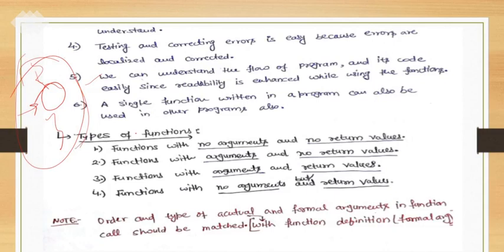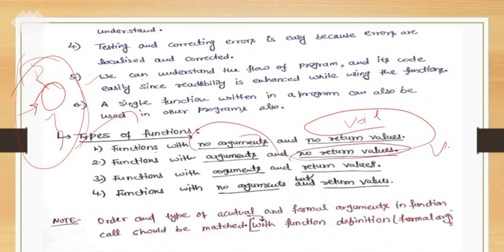The types of functions we have discussed: functions without any argument and without any return type (void); void with argument; with return type and without parameter; and with both return type and parameter. The order and type of actual and formal parameter arguments in the function call should be matched.